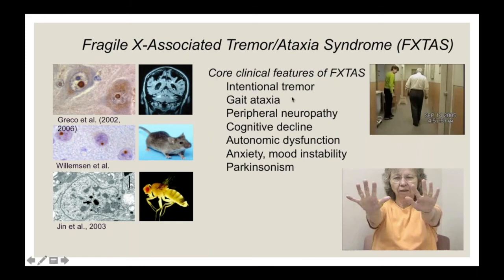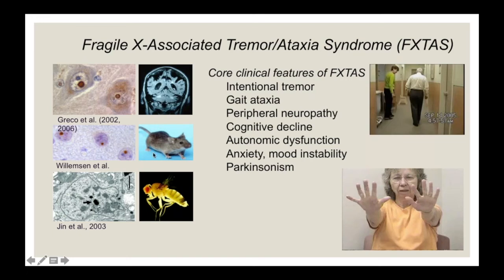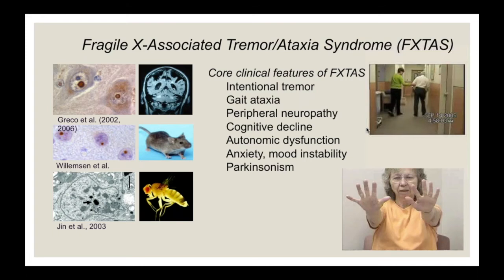Regarding neuropathology, FXTAS patients present with intranuclear inclusions throughout the brain in both astrocytes and neurons, brain atrophy, and increased T2 FLAIR signal in the cerebellum, cerebral white matter, and middle cerebellar peduncle. They also have progressive gait ataxia and frequent falls. These intranuclear inclusions are also found in the premutation mouse model and in a Drosophila model.